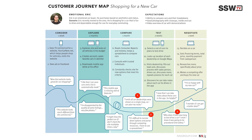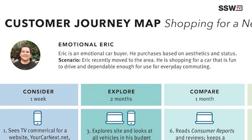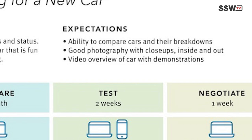Do you have one we can walk through? Yeah, sure. Here you can see an example customer journey map. We have 'Emotional Eric' shopping for a new car. The user persona at the top is really important — it's good to have a primary user to empathize with. You can see who they are, what their goal is, and their expectations.